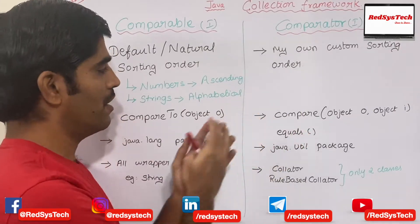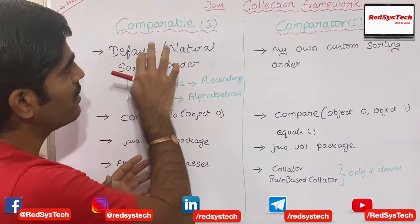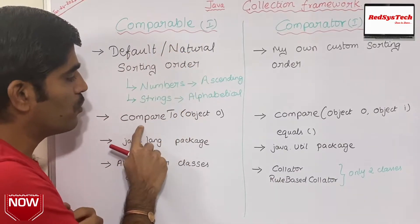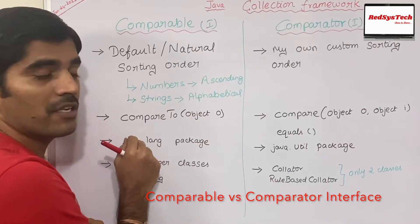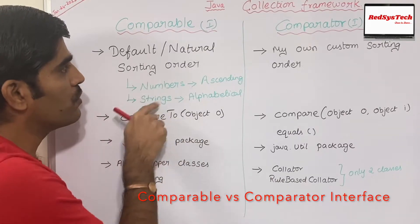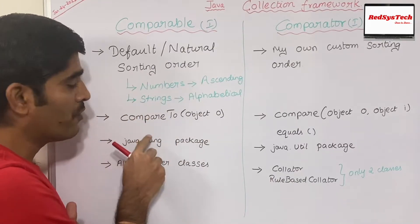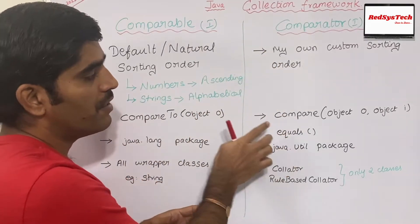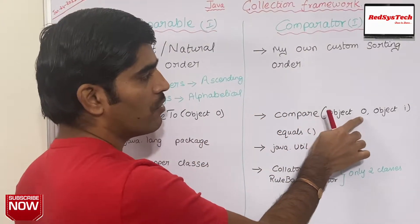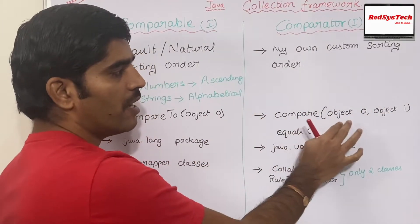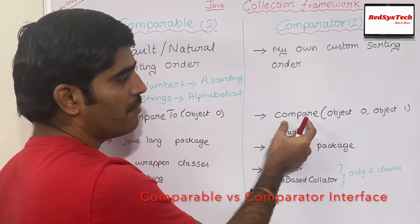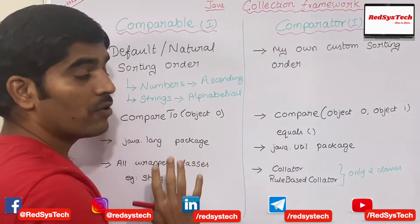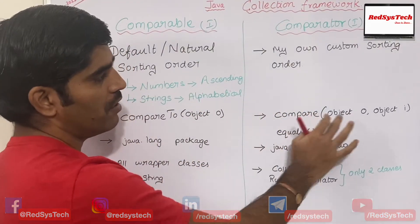If you look at the comparable interface in the Oracle documentation, inside it you will find a method called compareTo(Object). Whenever you want to implement default or natural sorting order, you have to override this method — compareTo(Object). In terms of comparator, we have two methods: the first is compare(Object1, Object2), where we pass two parameters. The method name is compare. And there is another method which is equals, but we don't typically touch that one — we usually override the compare method.